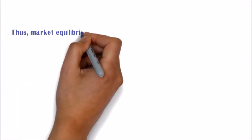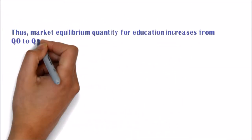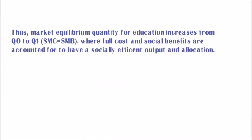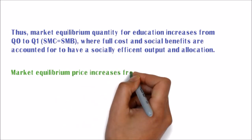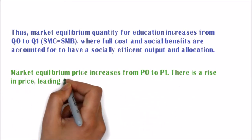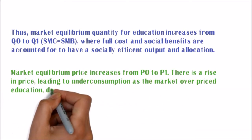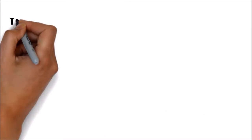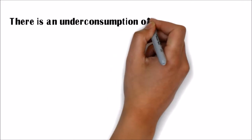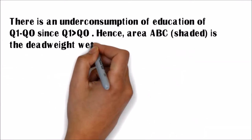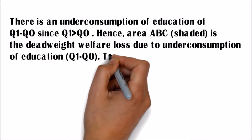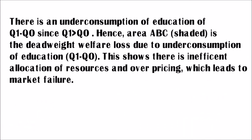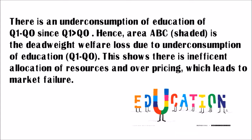Market equilibrium quantity for education increases from Q0 to Q1, where full cost and social benefits are considered to have a socially efficient output and allocation. Market equilibrium price increases from P0 to P1. There is a rise in price leading to under-consumption as the market over-prices education, deterring people from receiving education due to high cost. There is an under-consumption of education of Q1 minus Q0, since Q1 is greater than Q0. Hence, this causes a deadweight welfare loss due to under-consumption of education. This shows there is inefficient education resources and over-pricing, which leads to market failure.